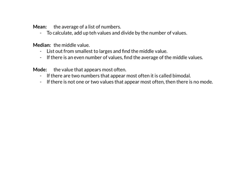Another one we can look at is something called median, which is the middle value. In order to find the median, you want to list out the values from smallest to largest and find the middle value. If there is an even number of values, you're going to find the average of the two middle values.